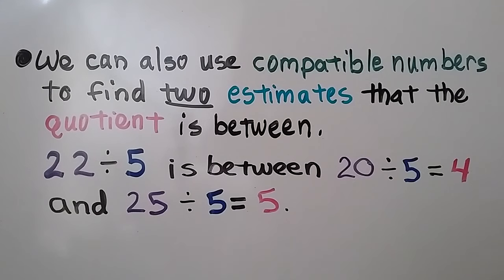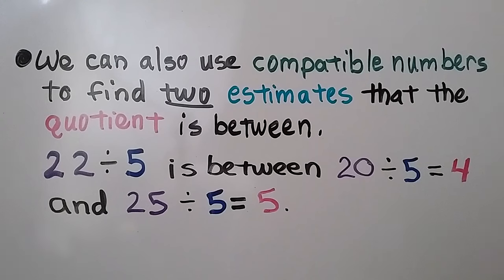We can also use compatible numbers to find two estimates that the quotient is between. 22 divided by 5 is between 20 divided by 5 equals 4, and 25 divided by 5 equals 5, so the quotient is in between 4 and 5.